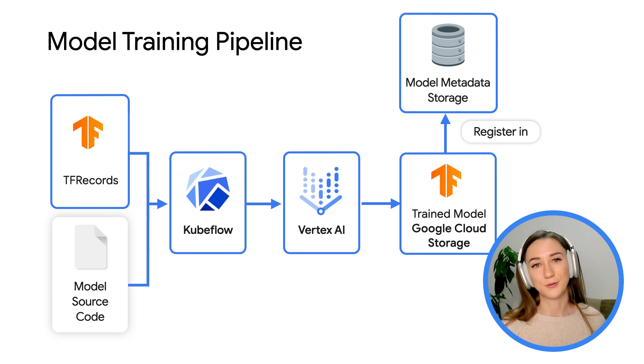Model registries and model metadata storage is a really interesting topic today. When you start with your first model or your first five models, storing those models in blob storage is sufficient. But when you scale to tens or hundreds of models, developing a specific workflow around managing models becomes very important in the ML lifecycle. Now that you have models, the next important step is deploying those models to run predictions. Can you walk us through the final pipeline around serving?